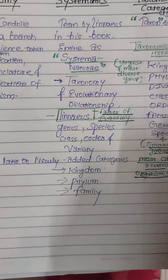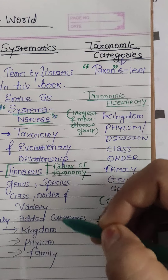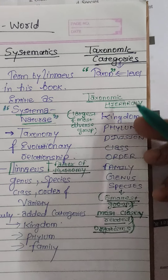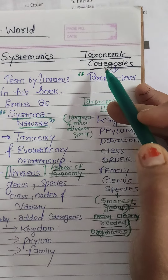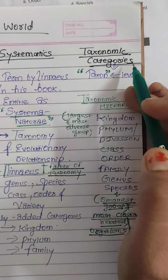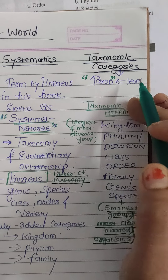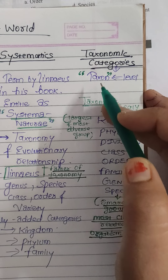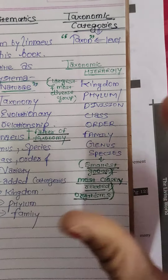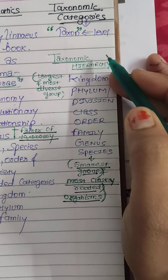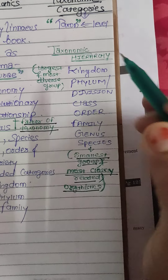Later on, Linnaeus added more categories: kingdom, phylum, and family. All these taxonomic categories are arranged in a well-defined manner. These taxonomic categories are referred to as a taxon, where taxon means a level or category within the taxonomic hierarchy.